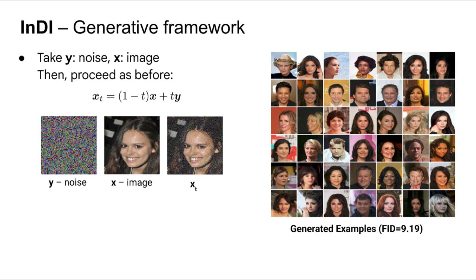If we do this, then we get very interesting results. You can see a few uncurated examples generated by applying INDI on CelebA 64x64. The framework is exactly the same as the one we presented for image restoration. The only difference is that here we just pair noise with a high-quality image. Results are not state-of-the-art, but are kind of cool since we didn't tune anything for this generative task.